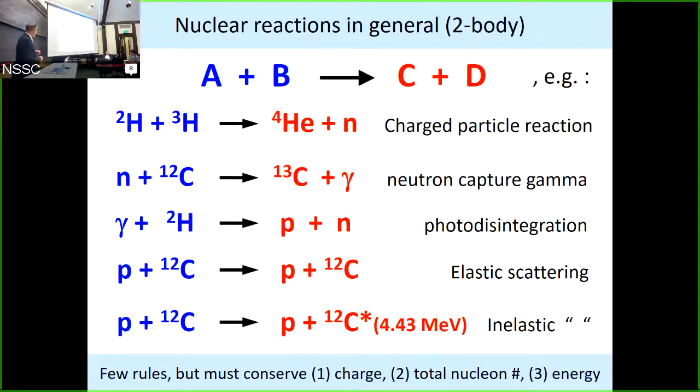There are a few rules, not many. You always must conserve charge. Charge must be conserved. Total nucleon number must be conserved as well. Here you have a neutron, 1 plus 12 is 13. Protons and neutrons are collectively called nucleons. And you have to conserve energy. Other than that, pretty much do what you want. There are some other things, but not of consequence to you.